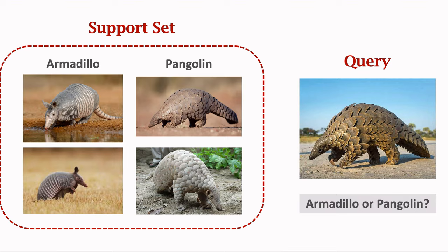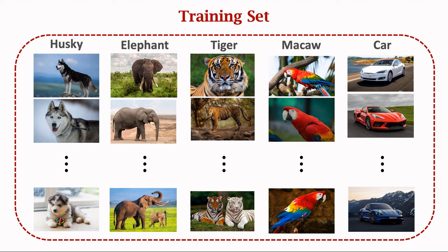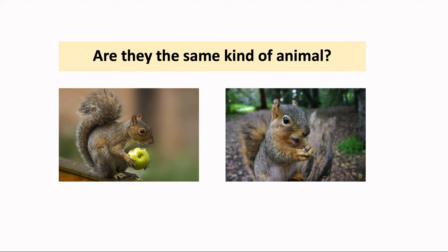Few-shot learning is different from standard supervised learning. The goal of few-shot learning is not to let the model recognize the images in the training set and then generalize to the test set. Instead, the goal is to learn to learn. You can think of it this way: I train the model on a big training set. The goal of training is not to know what elephant is and what tiger is, and not to be able to recognize unseen elephants and tigers. Instead, the goal is to know the similarity and difference between objects. After training, you can show two images to the model and ask whether the two are the same kind of animals. The model has learned the similarity and difference between objects.